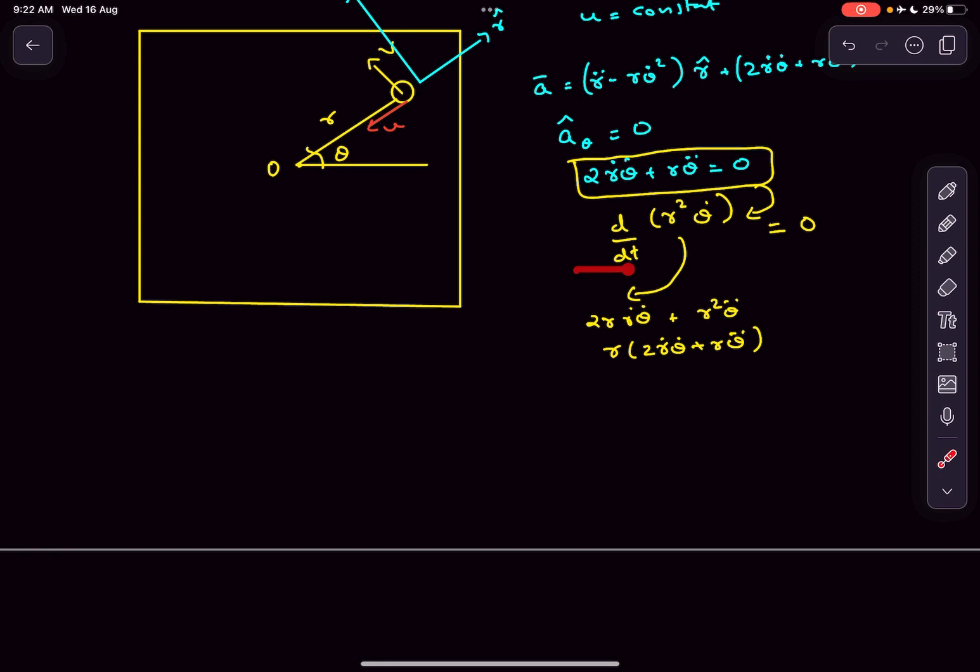If the derivative of a quantity is 0, that quantity is constant. So r square theta dot equals constant.